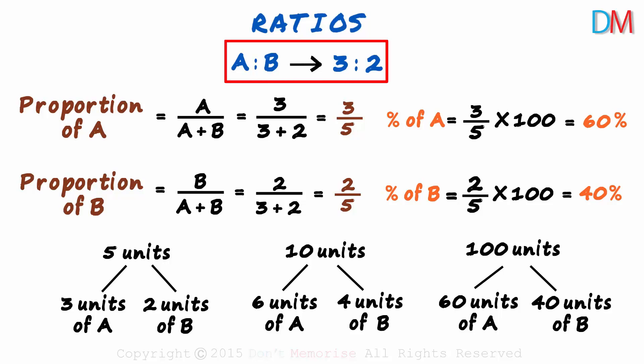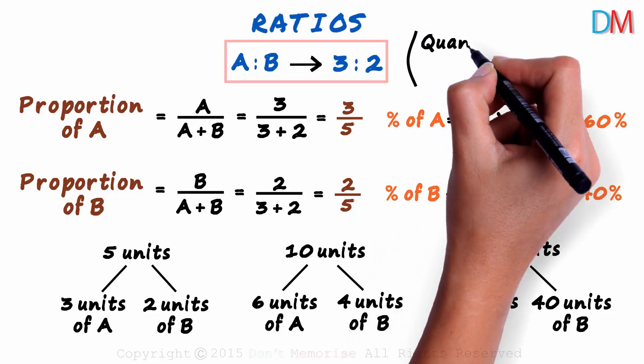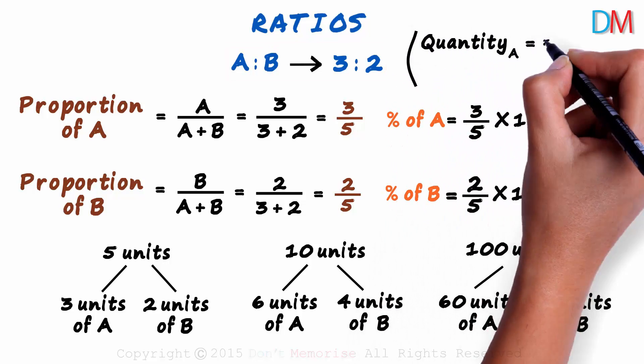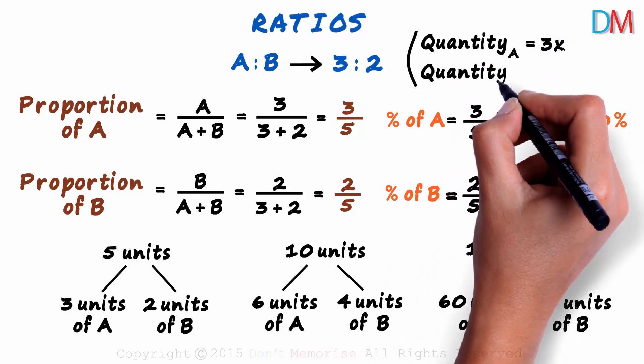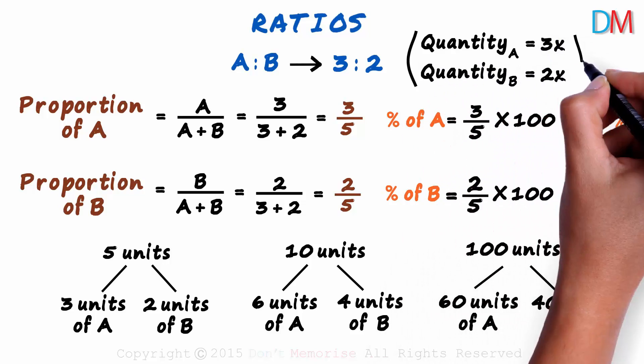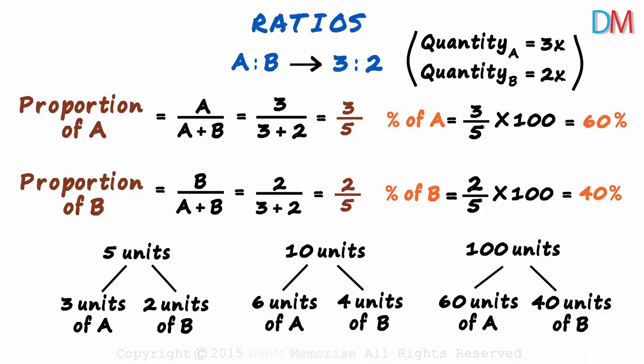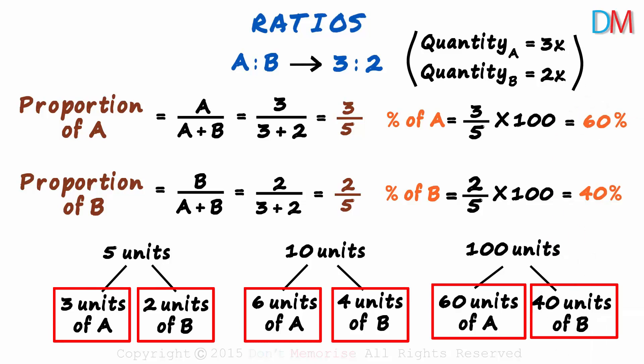So this ratio also tells us that the quantity of A will be a multiple of 3 or 3x, and the quantity of B will be 2x. The quantities of A and B will be multiples of 3 and 2 respectively.